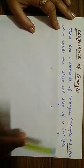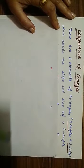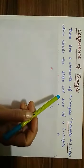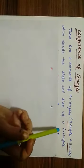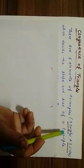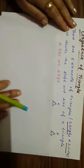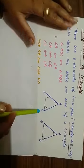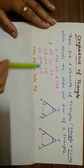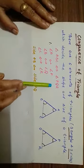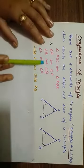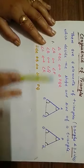These six elements decide the shape and size of a triangle - three angles and three sides. For example, we have two triangles ABC and PQR. Triangle ABC is congruent to triangle PQR. How is it congruent?